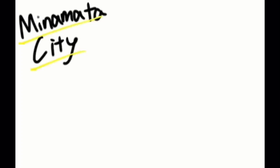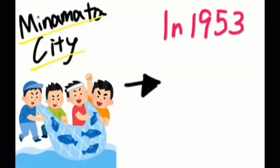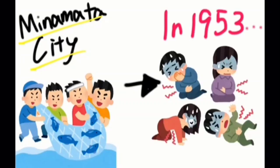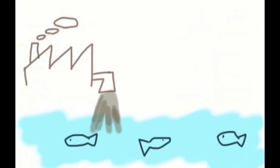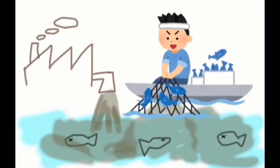I'll talk about Minamata city in Kumamoto, that was famous for fishing industry. In 1953, some people became strange illness, and since then, many people in Minamata died. The cause of the sickness is industrial waste water. Fish in the Minamata bay were polluted by it, and people in Minamata often ate them. It's the worst food chain.